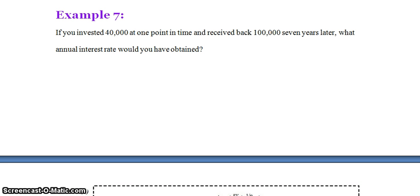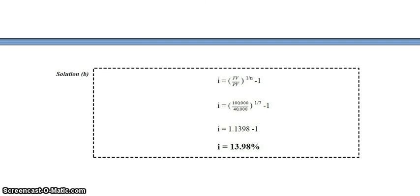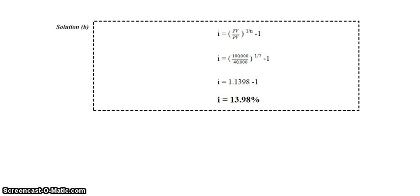Example: If you invested 40,000 at one point in time and received back 1 lakh 7 years later, what annual interest rate would you have obtained? Using the formula: i = (FV / PV)^(1/n) − 1 = (1,00,000 / 40,000)^(1/7) − 1. Simplifying, that value comes to 1.1398 − 1, so i = 13.98%. This is the answer.